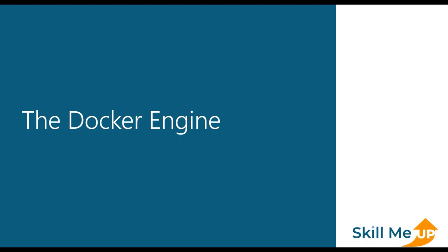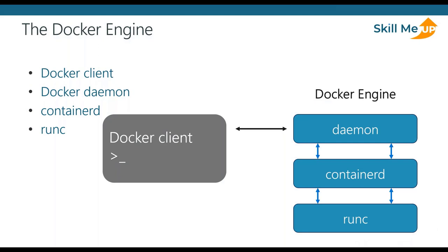The Docker engine is the core software that runs and manages the containers. We often refer to it simply as Docker or the Docker platform. It's modular in design with a lot of swappable components — where possible these are based on open standards from the OCI. The Docker engine is made up of many specialized tools that work together to create and run the containers: APIs, an execution driver, runtime, and some shims.